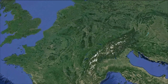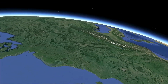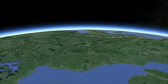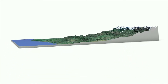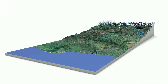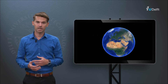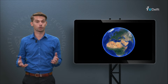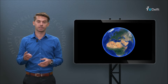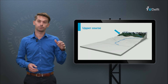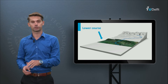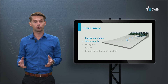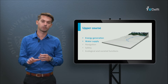River Rhine, shown in the animation, will be used as a basis to explain all types of interventions in different areas of the river. The river flows from the Swiss Alps through Germany to the Netherlands, where the river mouth flows into the North Sea. As was explained in the water systems module, a river can be divided in three sections: the steepest upper course, the middle course, and the least steep lower course. The following module will discuss typical interventions in all sections of a river system.